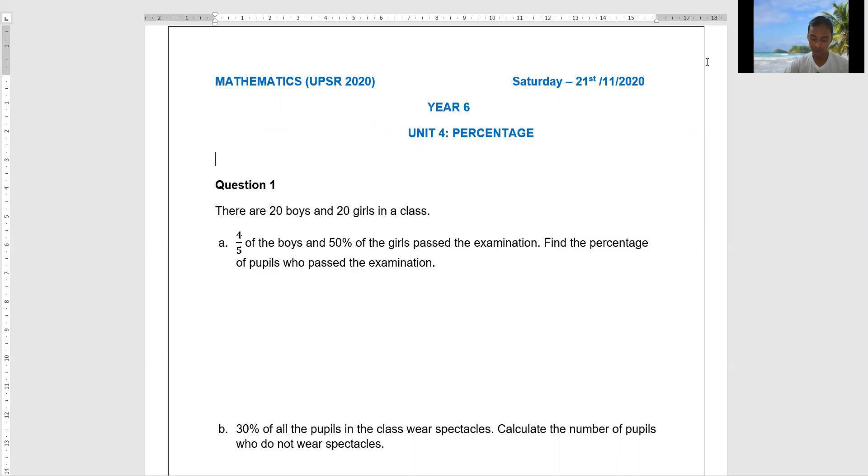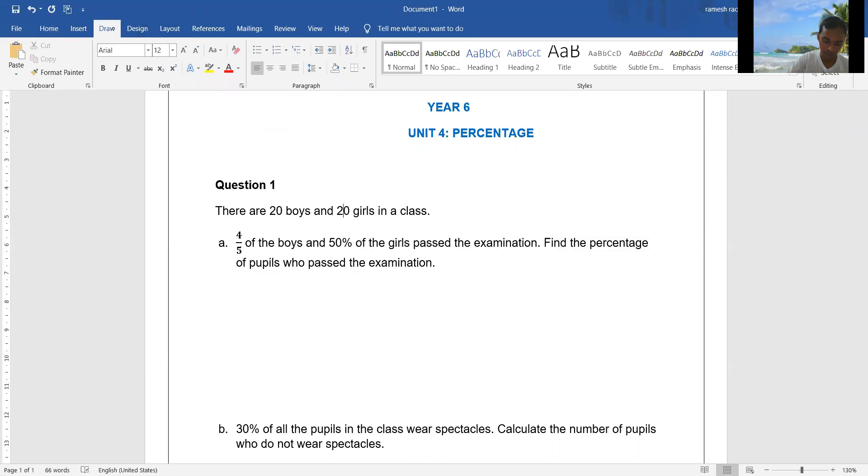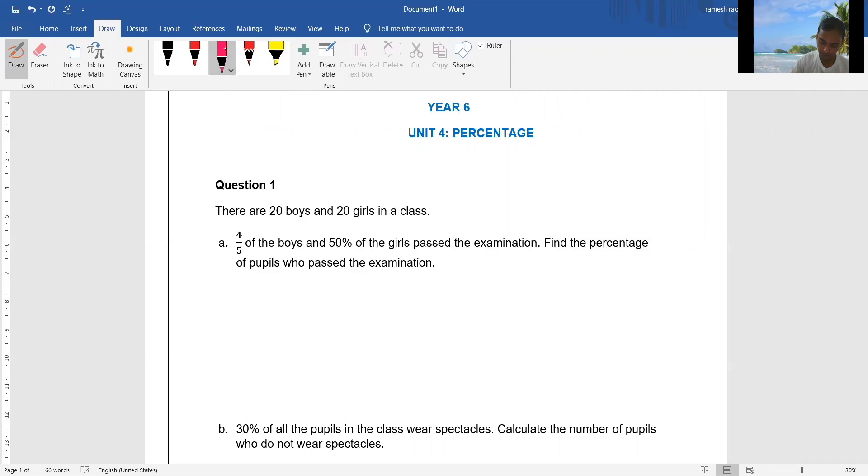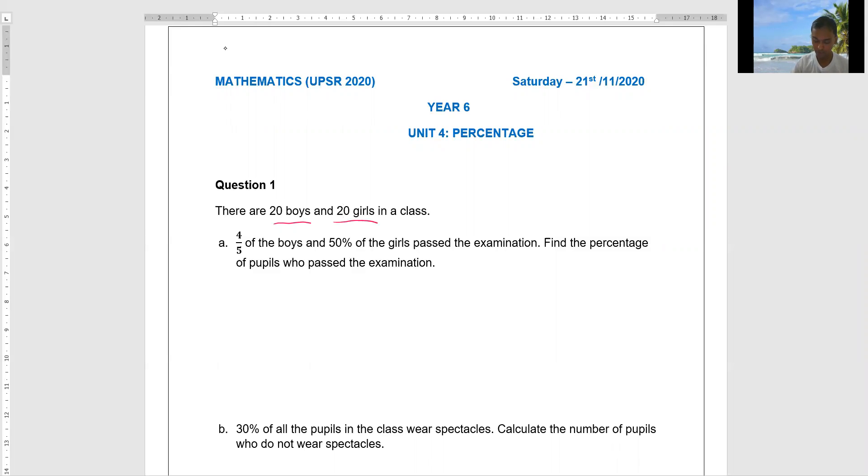There are 20 boys and 20 girls in a class. Four out of five of the boys and 50% of the girls pass the examination. Find the percentage of pupils who pass the examination. The first thing you have to do is find how many boys pass the exam and how many girls pass the exam too.